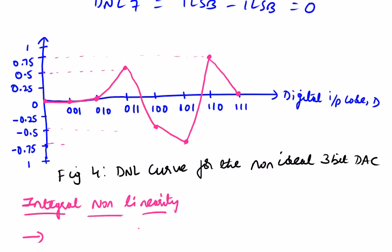Always, your DNL and INL should be less than or equal to half LSB. But looking at DNL(5) and DNL(6), they are more than plus or minus half LSB, so the DAC is not 3-bit accurate.